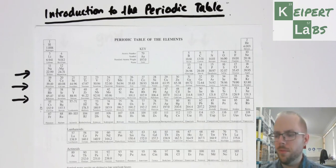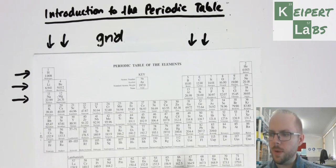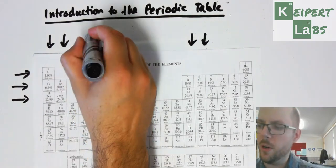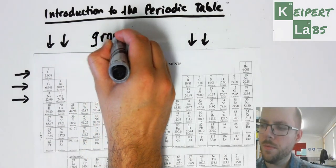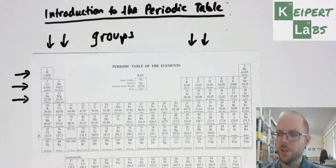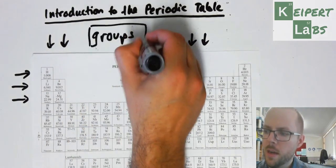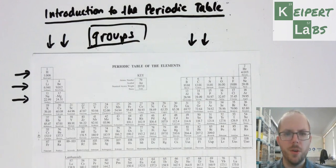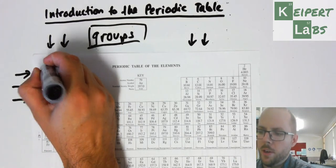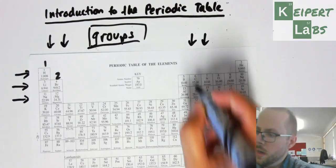We have these columns, and we give these columns a particular name - we call them groups. In the periodic table, columns are known as groups. Make sure that you take note of that terminology please. Write that vocab down in your notes. We call them groups and we give these groups a number.